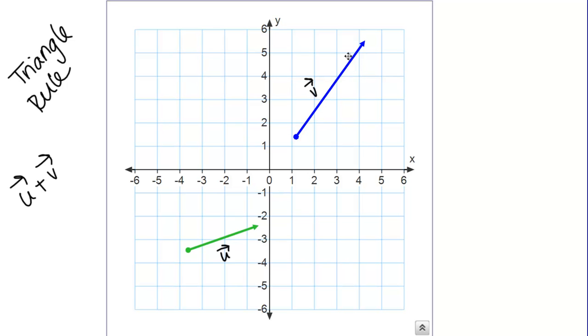Remember, a vector is defined by its magnitude and direction. I can move these around and they're still the same vector as long as they're pointed in the same direction. What you're going to do in the triangle rule, you have your first vector which for me is U. I'm going to take my second vector V and I'm going to put the tail of V at the head of U, just like that.